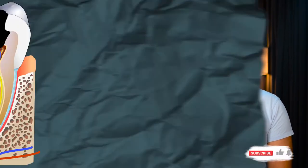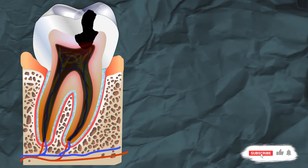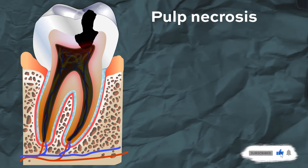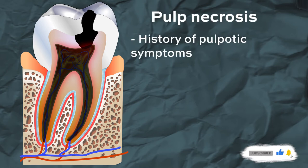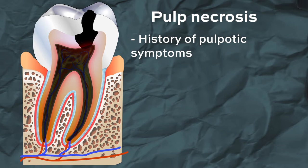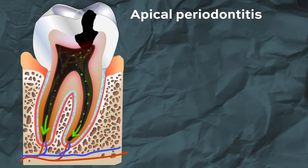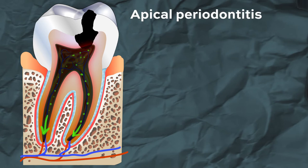As the infection advances the pulp will start to die. This is called pulp necrosis, and at this stage the patient may present with a history of pulpitic symptoms which they no longer have. While the pulp is dying, the bacteria will also travel to the periapical tissues and cause symptoms of apical periodontitis, or as some call it, acute apical periodontitis.